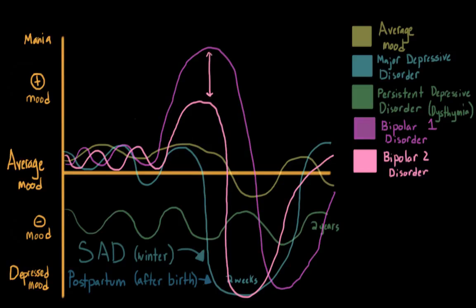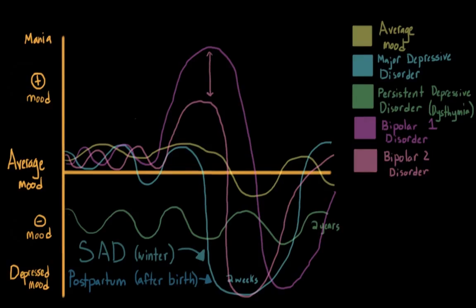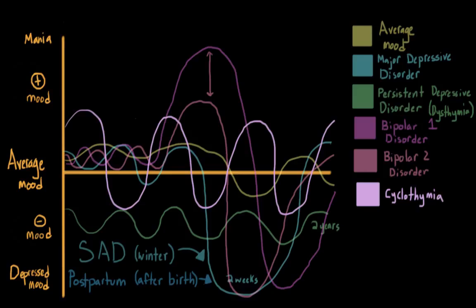But we also have other disorders that are included in this group. One is known as cyclothymic disorder, or cyclothymia. And this disorder is characterized by frequent mood swings, so moving from a state of hypomania to a state of mild depression.